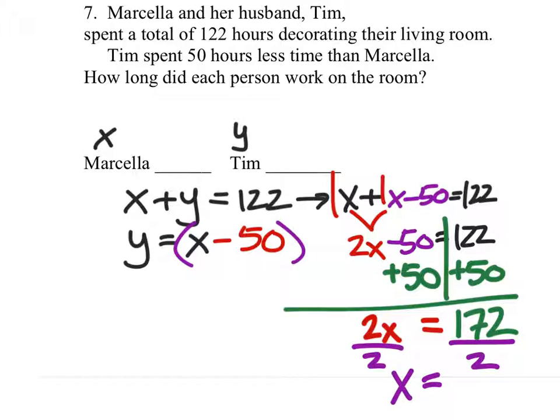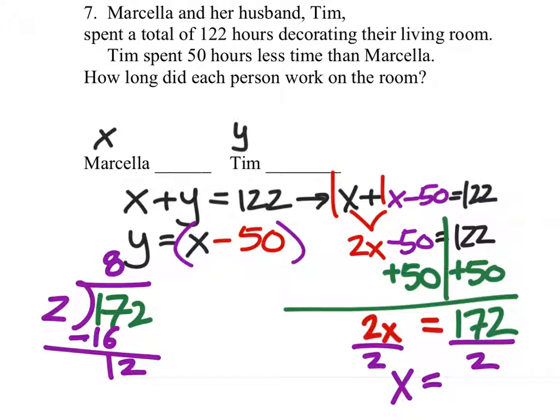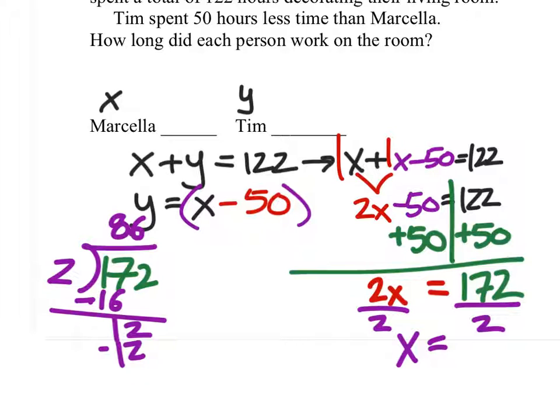And we find that x. Let's do that. 172 divided by 2. 2 doesn't go into 1, but it will go into 17 8 times. 8 times 2 is 16. Subtract. And we get 12. 2 goes into 12 6 times. 6 times 2 is 12. And when we subtract this one, we also get 0.